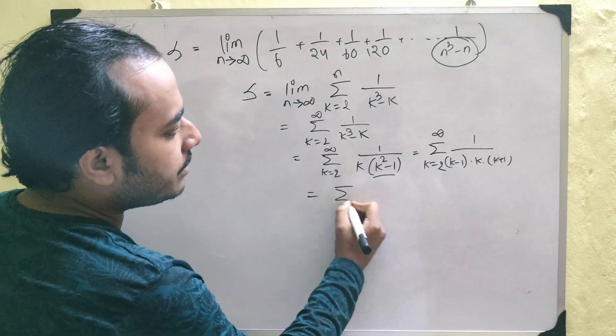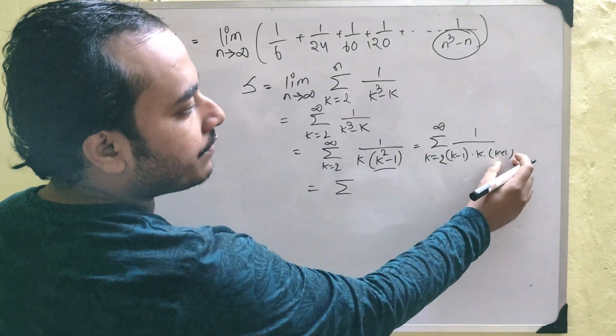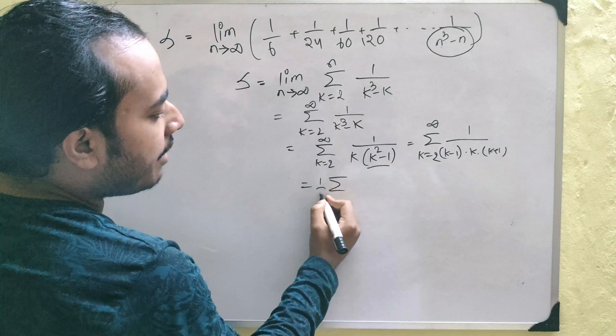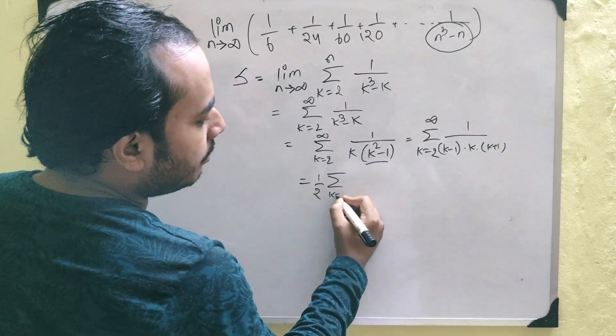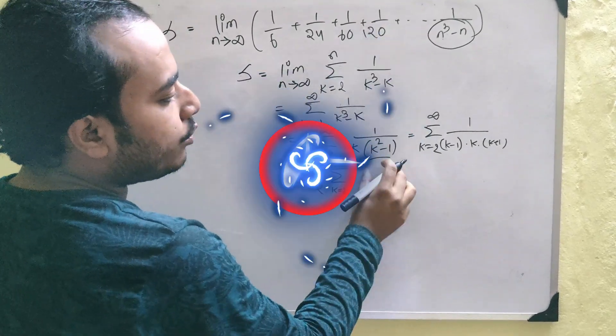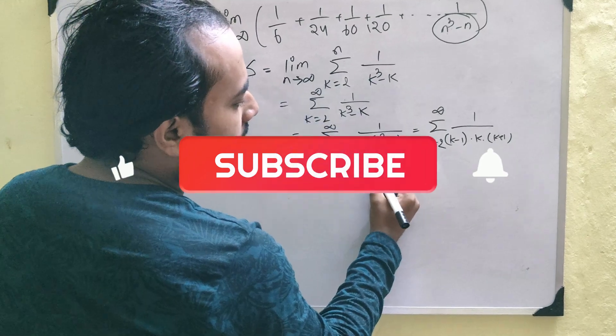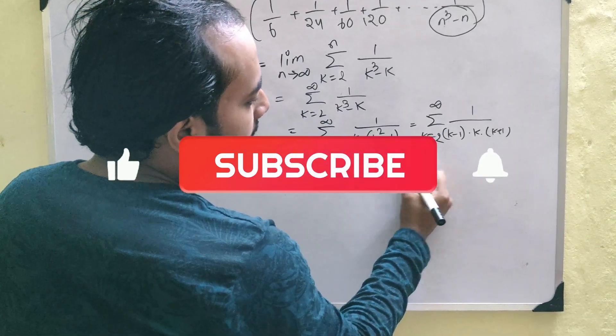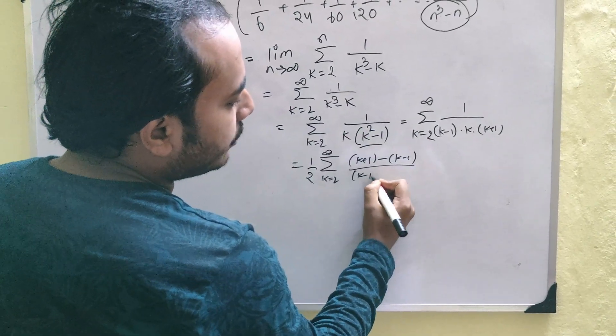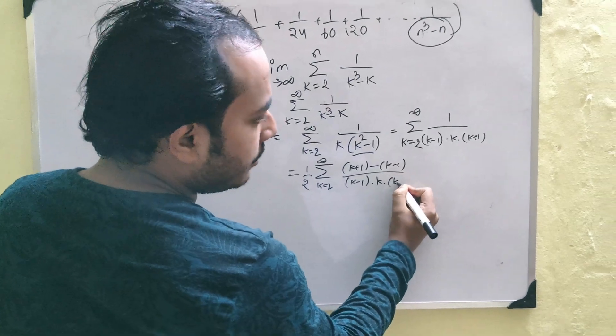How? First, we are going to take the constant difference of k plus 1 and k minus 1 which is 2 and introduce a half here and k equals to 2 to infinity and write the 2 in the numerator as k plus 1 minus of k minus 1 divided by k minus 1 into k into k plus 1.